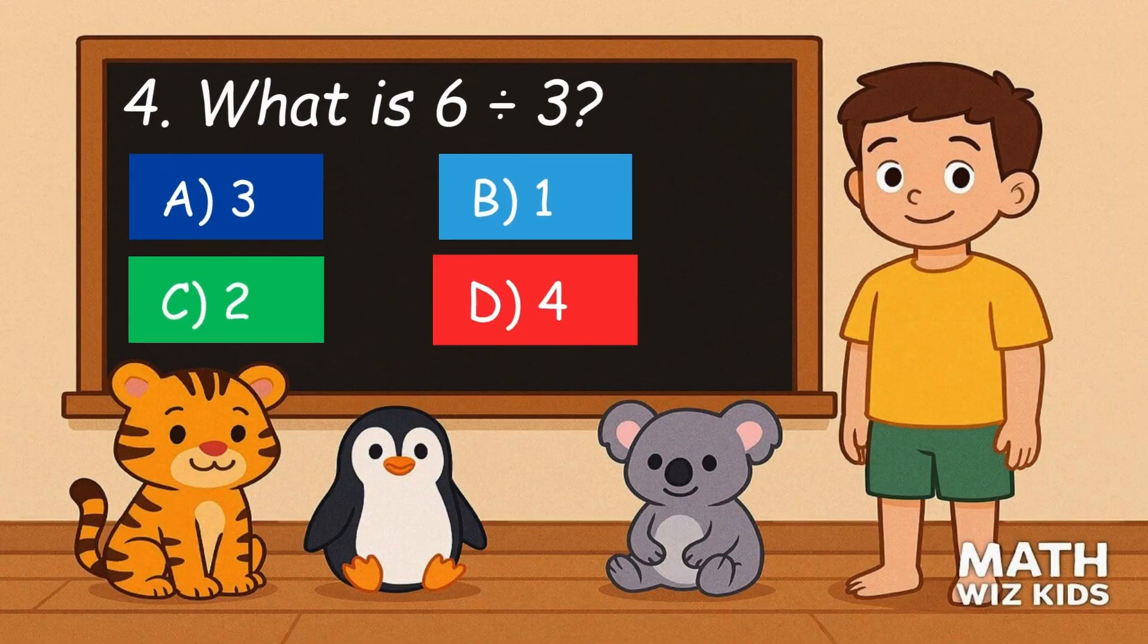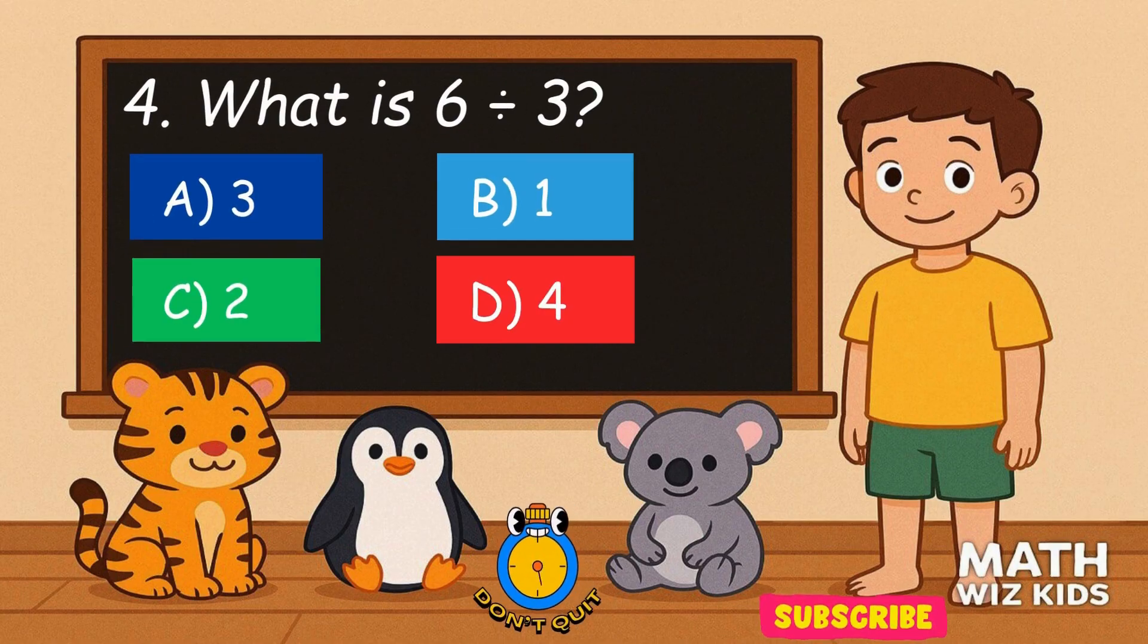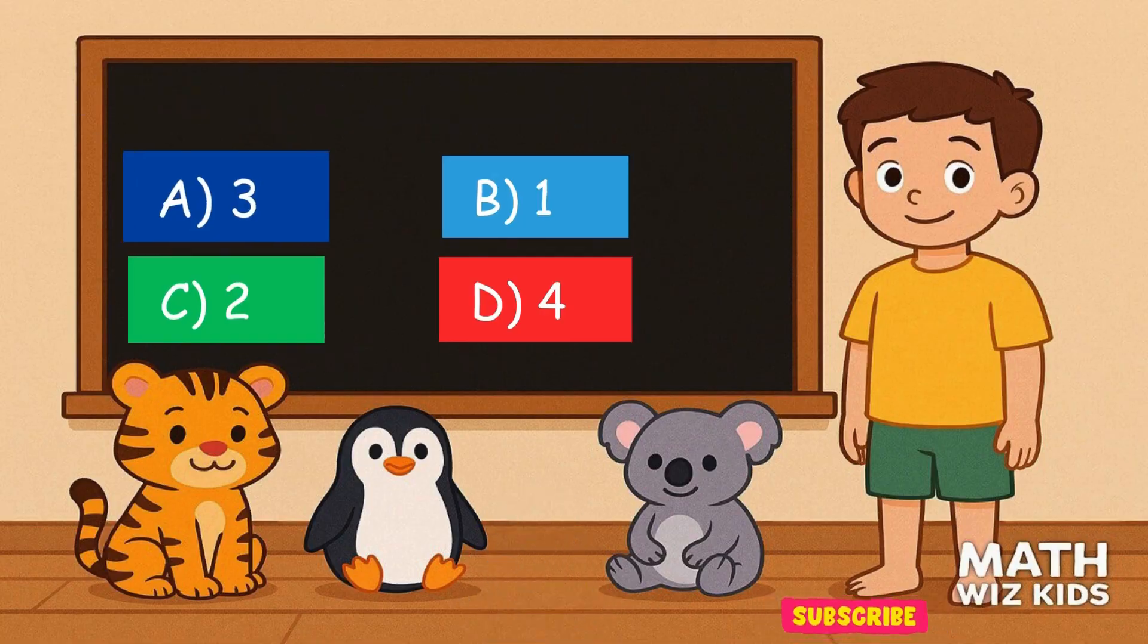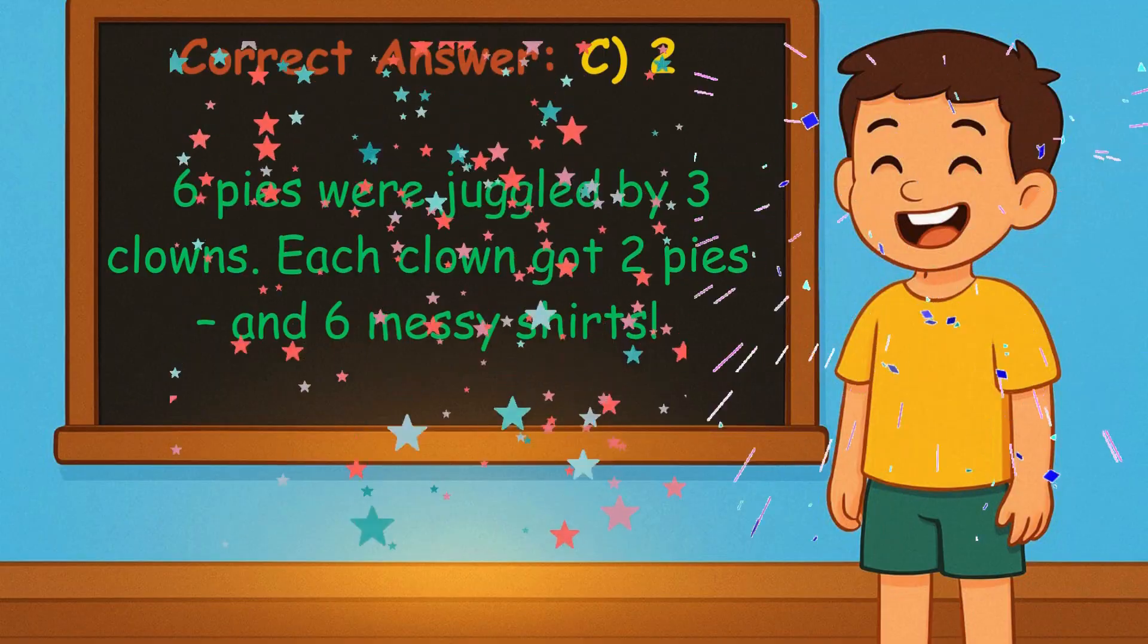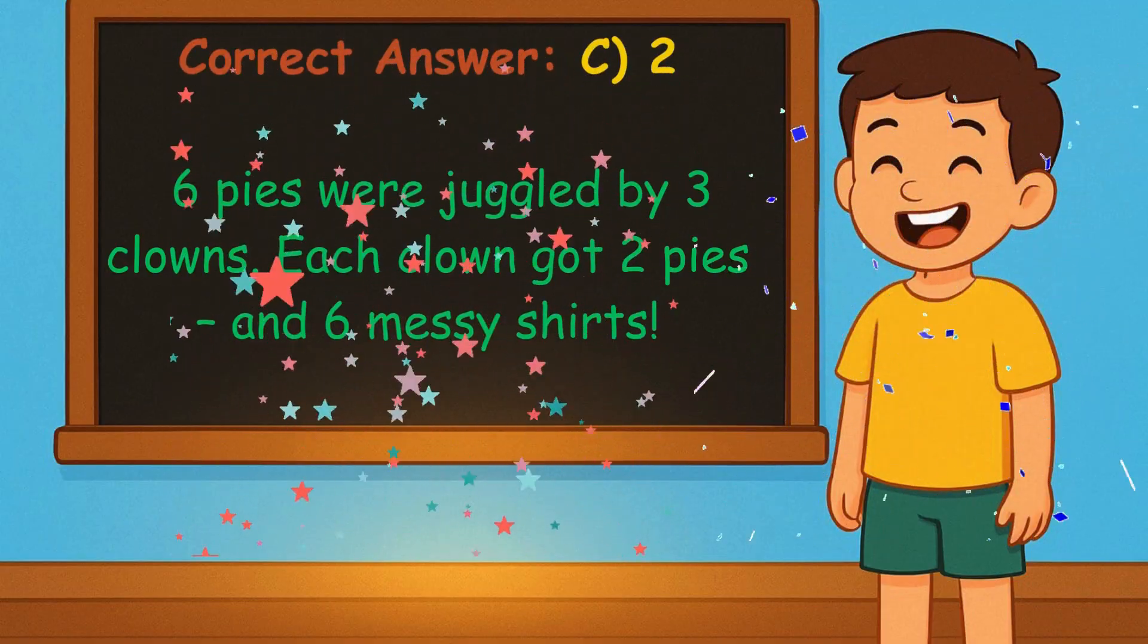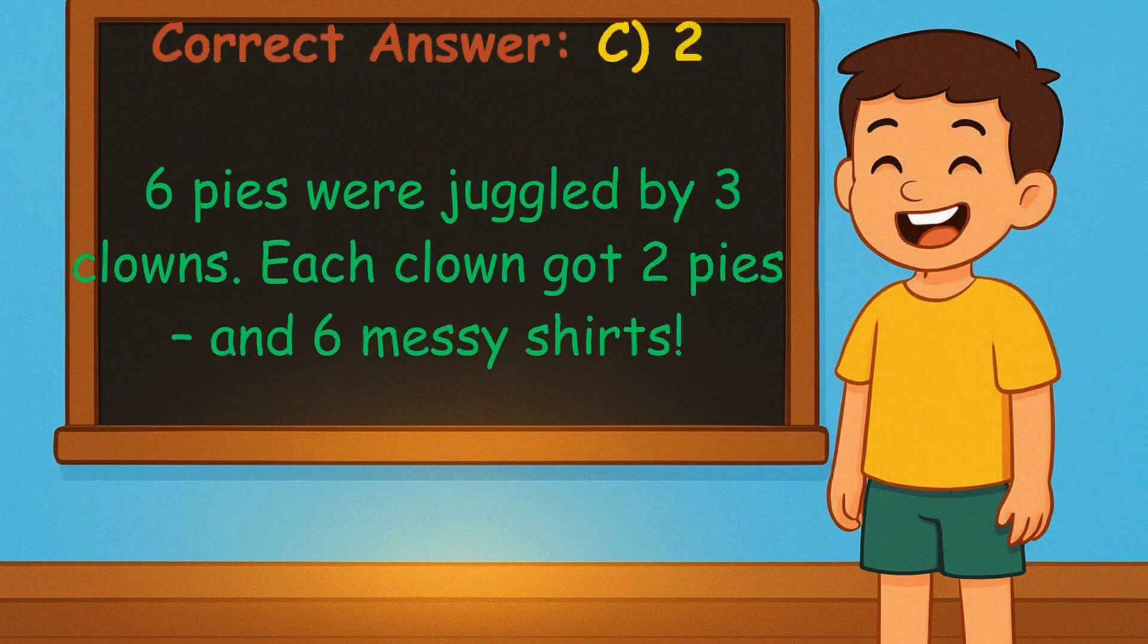4. What is 6 divided by 3? Is it A, 3, B, 1, C, 2, or D, 4? Correct answer is 2. Six pies were juggled by 3 clowns. Each clown got 2 pies, and 6 messy shirts.